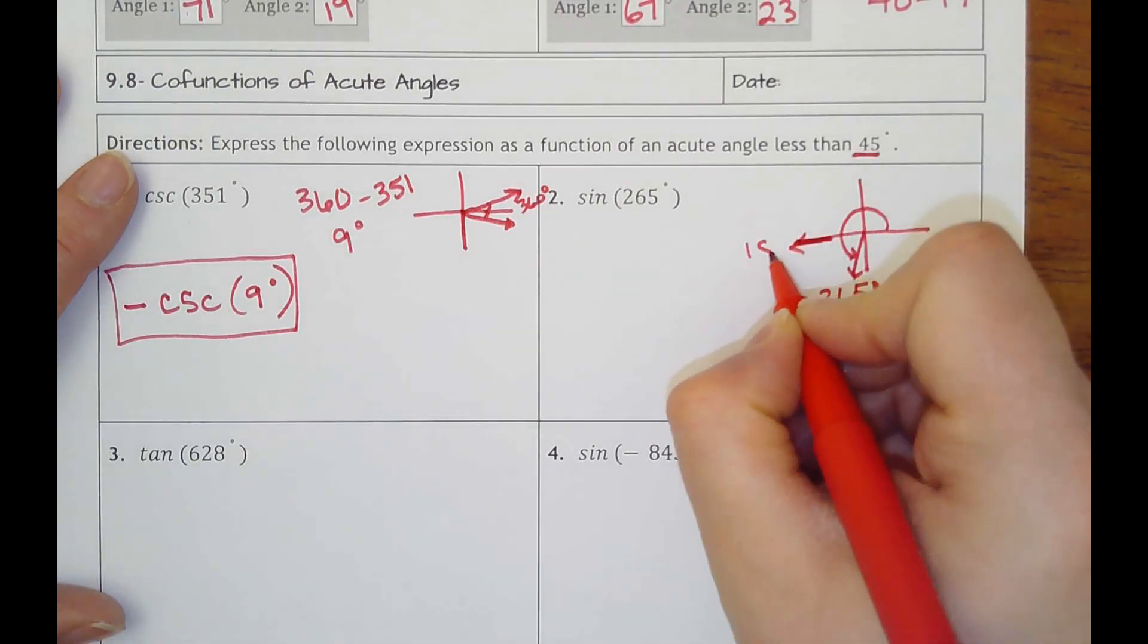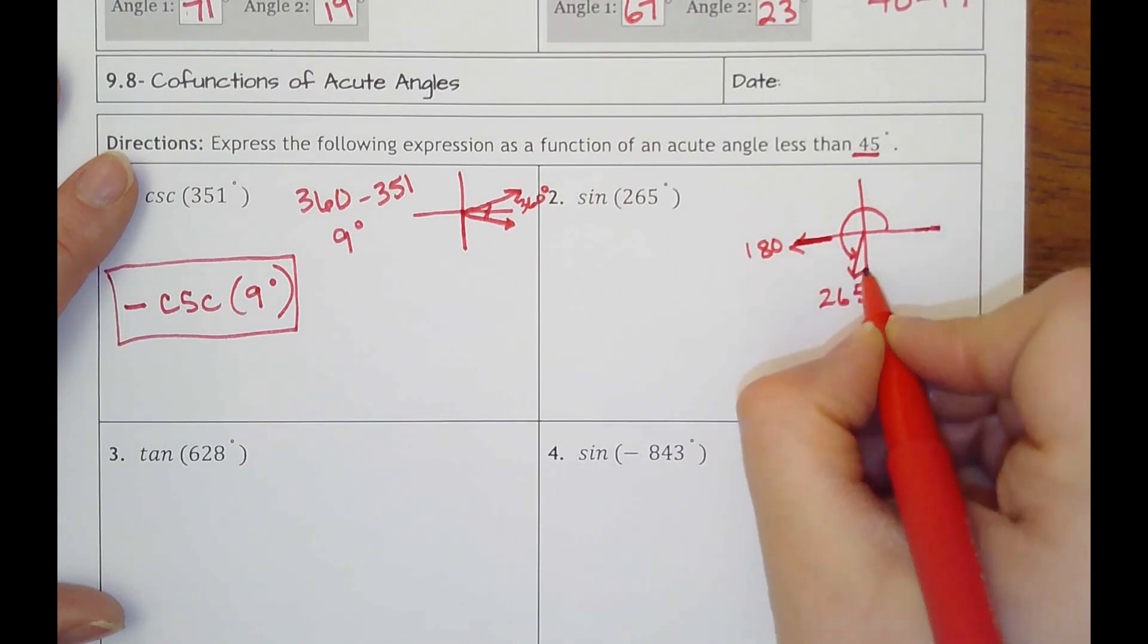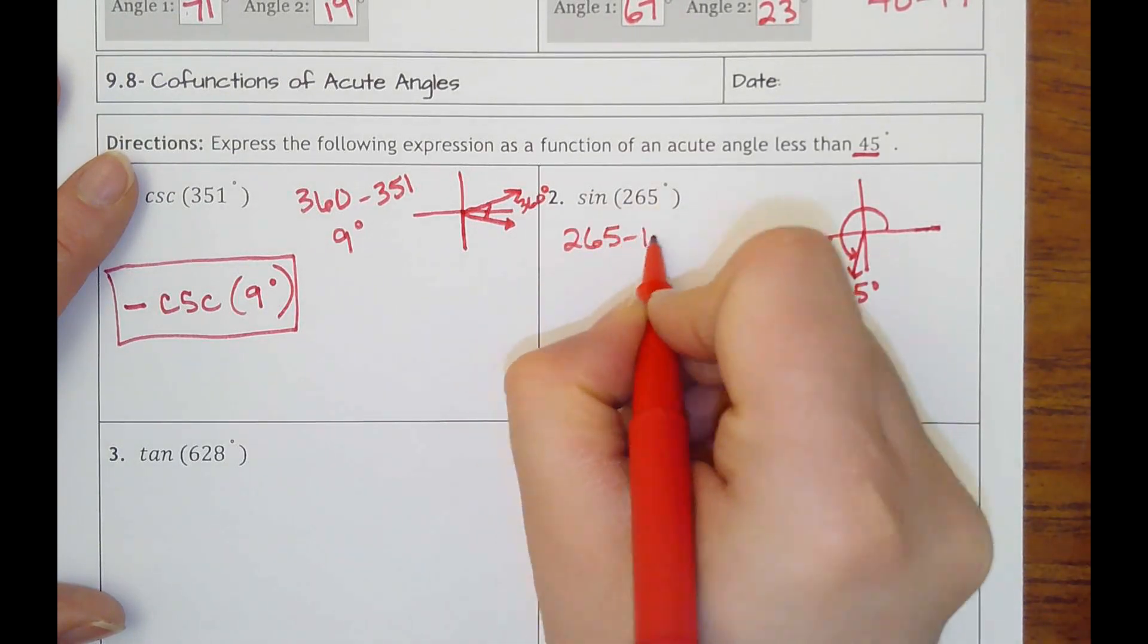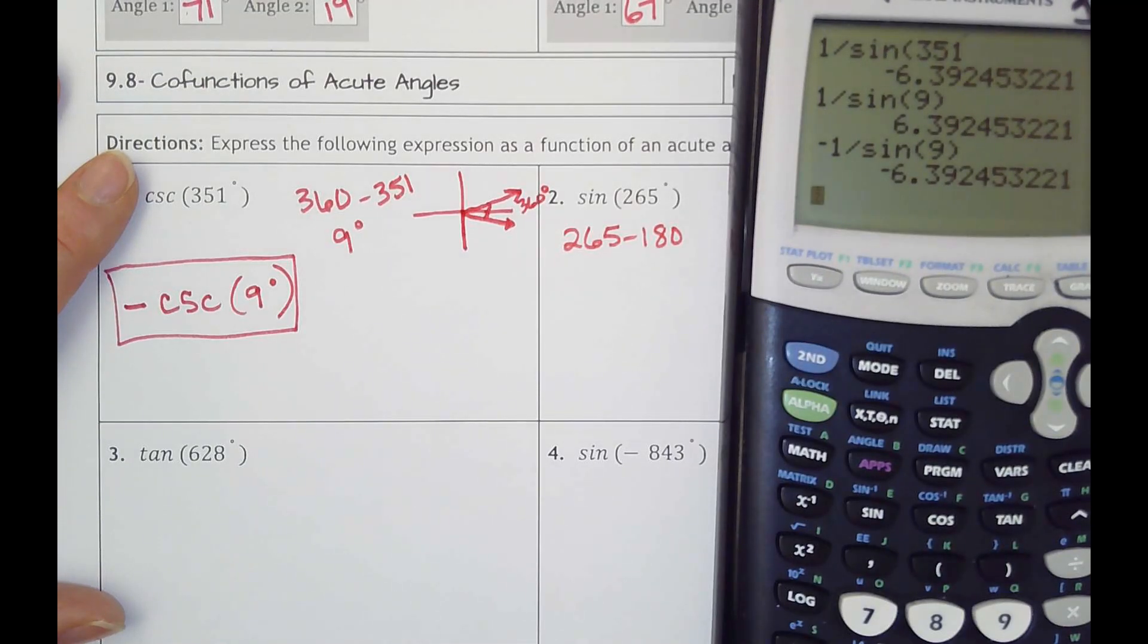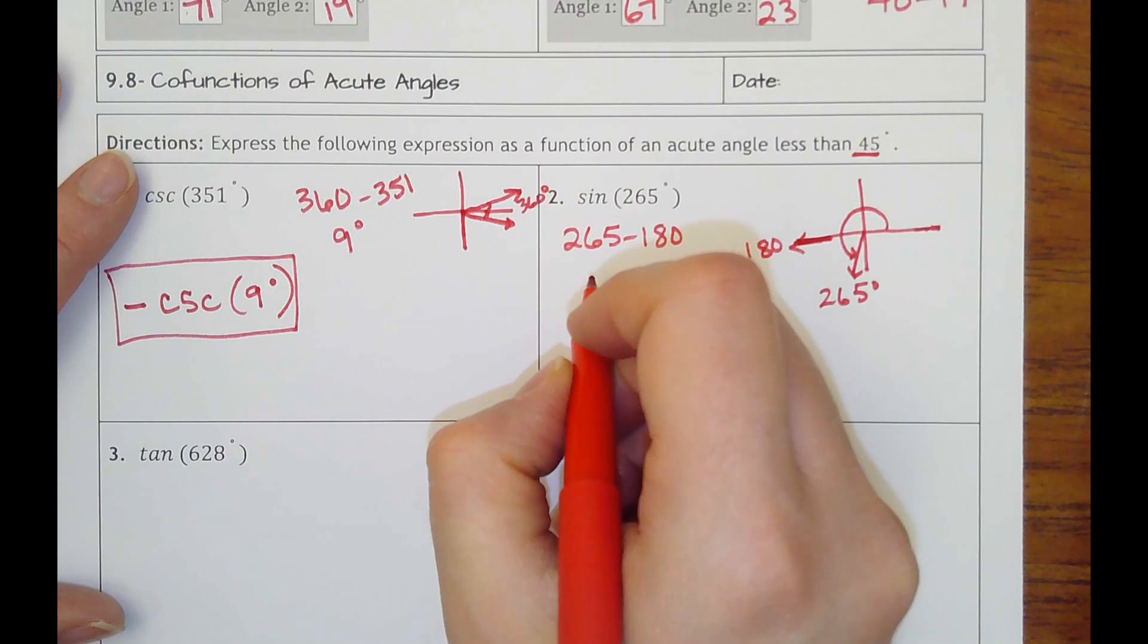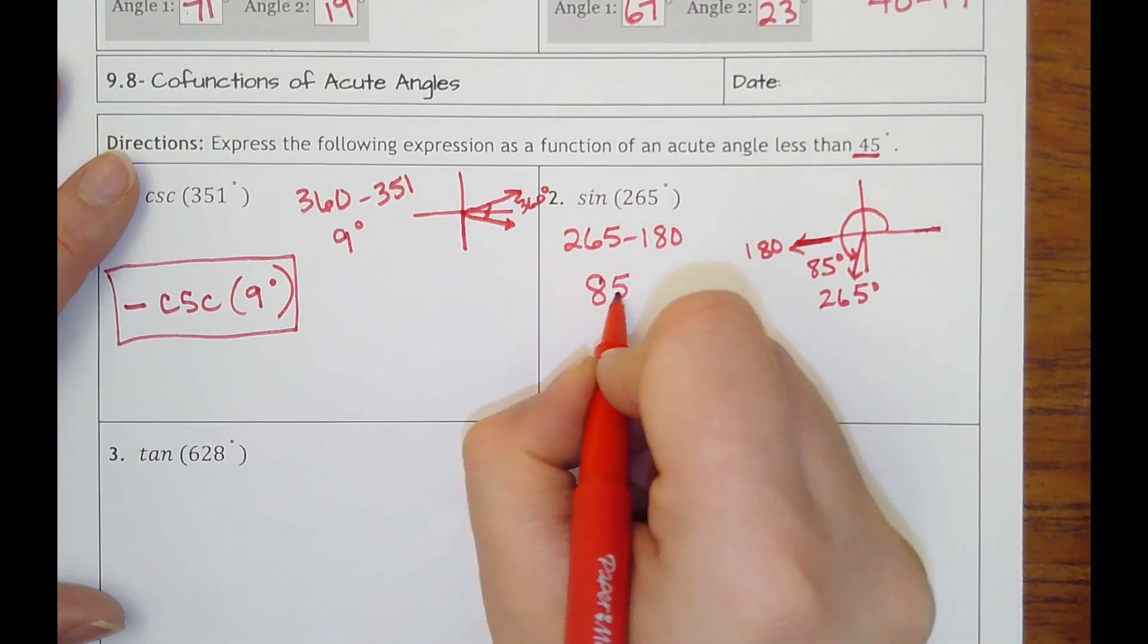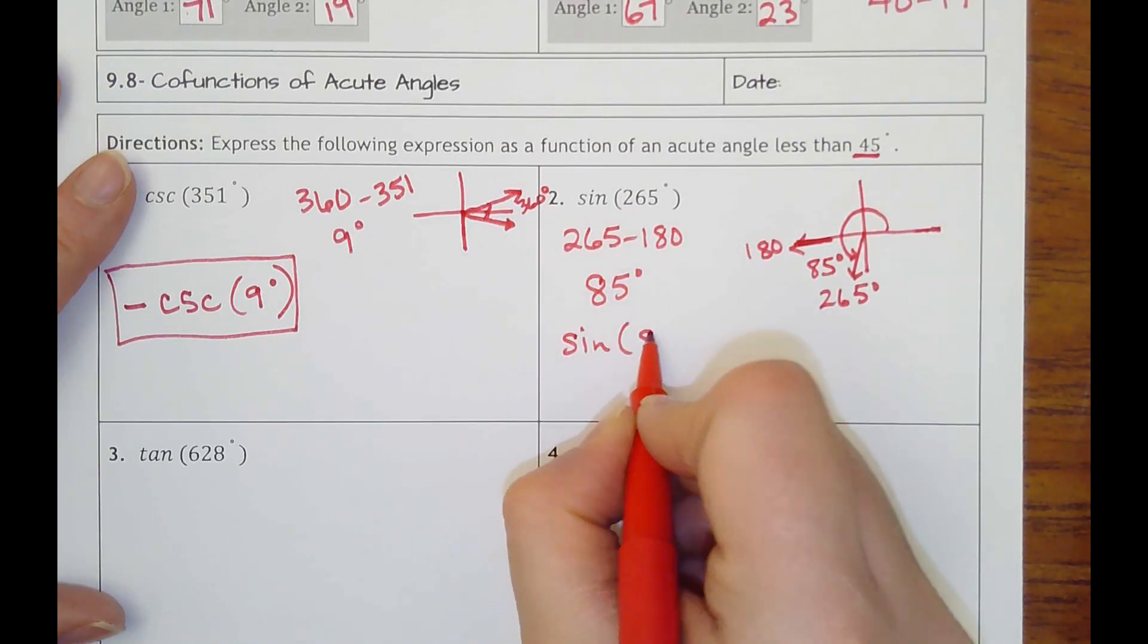So the reference angle, it's closest here to the 180. Remember, we always take it from 180 or 0 or 360. Never here and here on the y-axis. So I would take 265 minus 180 to get what this angle actually is. It should be 85. Yeah, because we said it was almost, it's only 5 degrees away from the 270. So 85 degrees is the angle here. That's my reference. So I'm just going to go ahead and rewrite that it's sine of 85 degrees.